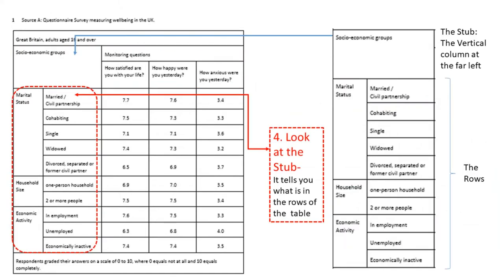Next you look at the column stub. What is this stub? It is the vertical column at the far left of the table. It indicates the marital status, the household size, and the economic activity of the people, and all these are further detailed in the rows. For instance: married, civil partnership, cohabitation, single, widowed, divorced, separated or former civil partner, one person household, two or more persons, employment, unemployed, economically inactive. These are all the indicators found in the rows — now you understand what is meant by the stub.